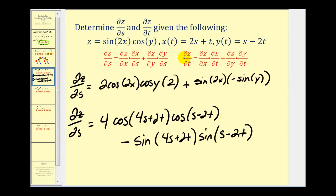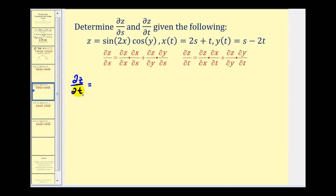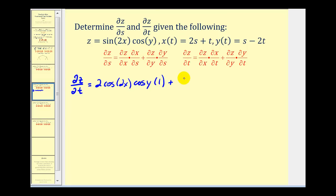Now let's find the partial derivative of z with respect to t. So for the partial of z with respect to t, we're going to have the partial of z with respect to x again. The derivative of sin(2x) is going to be cos(2x) times two, or 2cos(2x), and cos(y) would be our constant. Times the partial of x with respect to t — that's just going to be one. Plus the partial derivative of z with respect to y: sin(2x) is a constant, and the derivative of cos(y) is going to be negative sin(y), so we have sin(2x) times negative sin(y).